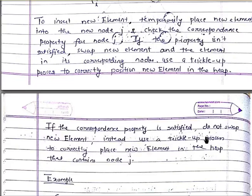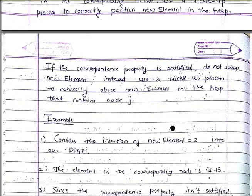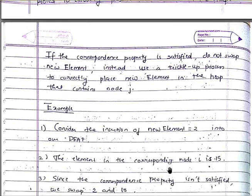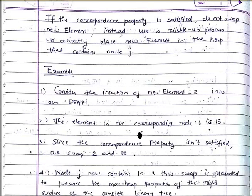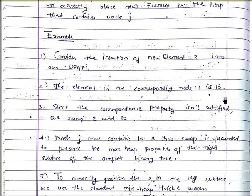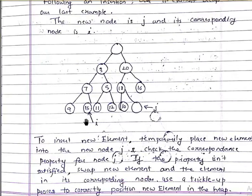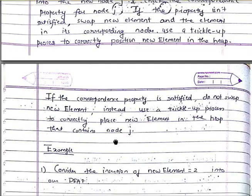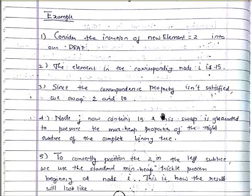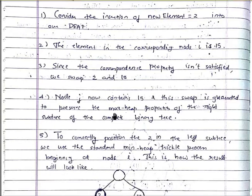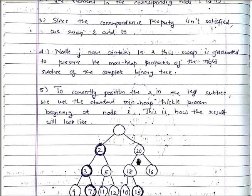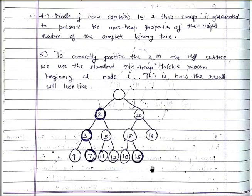If the correspondence property is satisfied, do not swap. Instead use a trickle-up process to correctly place the new element in the heap containing node j. Consider inserting element 2: the element in corresponding node i is 15. Since the correspondence property isn't satisfied — 2 cannot stay in the max-heap side — you swap 2 and 15. Now node j contains 15 and 2 moves to the min-heap side.